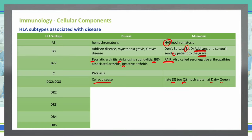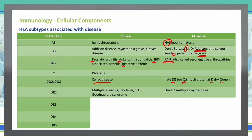HLA-DR2 is associated with multiple sclerosis, hay fever, lupus, and Goodpasture syndrome. You can remember this using the mnemonic DRIVE — DR specifically — so DR2 is your HLA subtype. Think 'DRIVE through multiple hay pastures': multiple for multiple sclerosis, hay for hay fever, and pastures for Goodpasture syndrome. SLE is also associated with DR2.